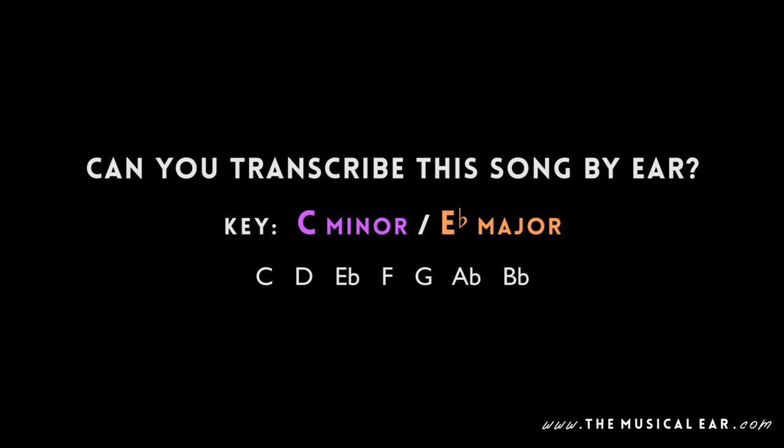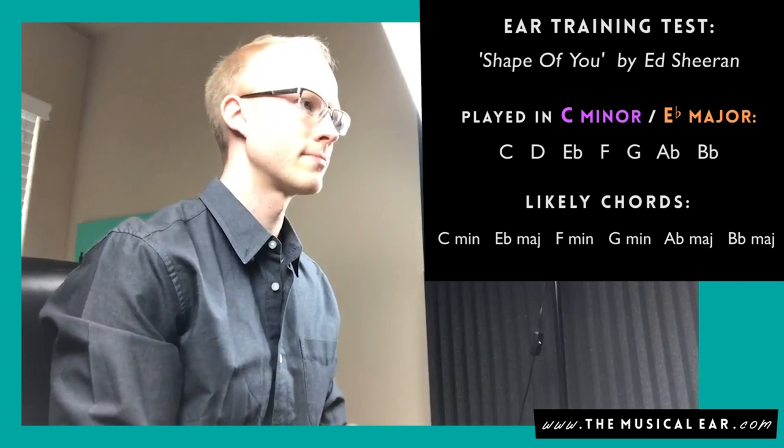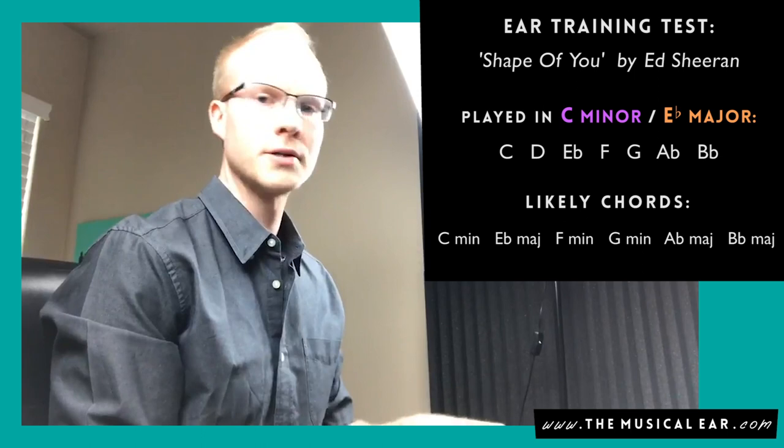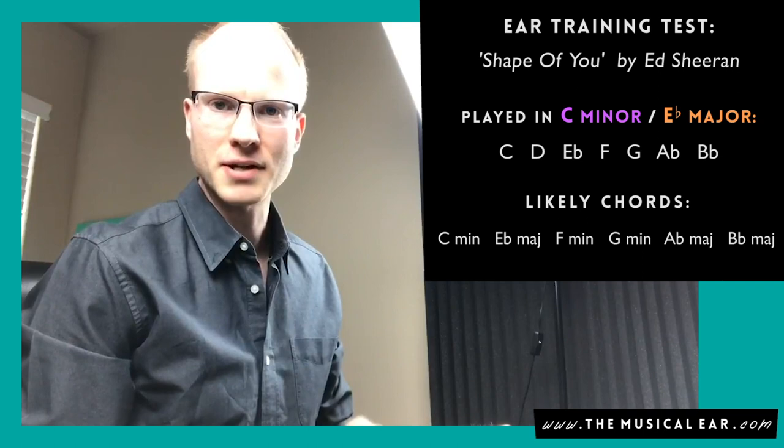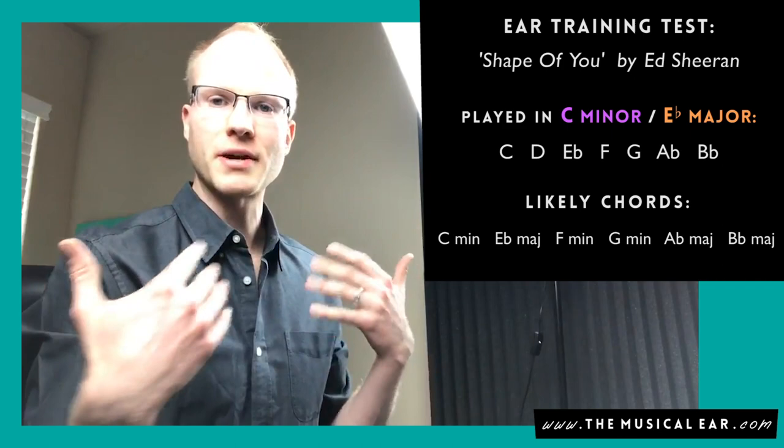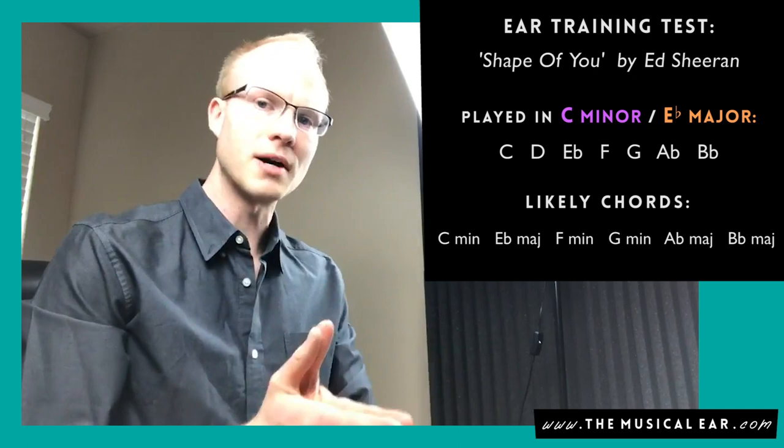Okay, so we're gonna start with the chord progression. So how do we transcribe chord progressions? Shape of You is perfect. Great, Stephen, glad you're happy with this song. So to transcribe chord progressions, you have to focus on the bass line because the bass line virtually always plays the root of the chord above.